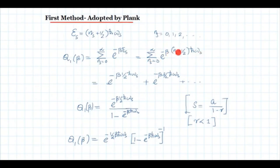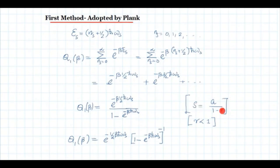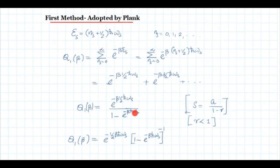Putting n_s = 0 gives e^(−β·½ℏω_s); putting n_s = 1 gives e^(−β·(3/2)ℏω_s), and so on. This is the sum to infinity of a geometric progression with first term e^(−β·½ℏω_s) and common ratio e^(−βℏω_s). Since e^(−βℏω_s) is always less than 1, the sum equals a/(1 − r), giving q₁(β) = e^(−½βℏω_s) / (1 − e^(−βℏω_s)), which can also be written as e^(−½βℏω_s) · (1 − e^(−βℏω_s))^(−1).